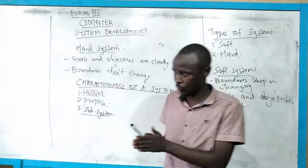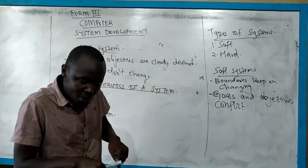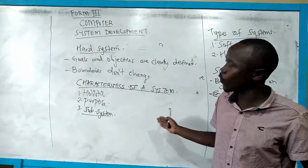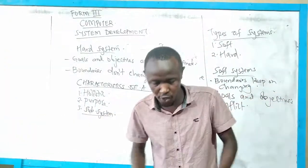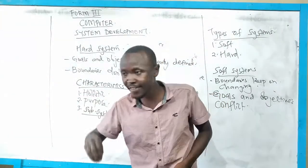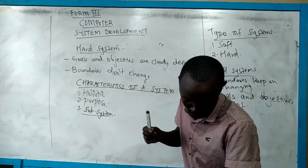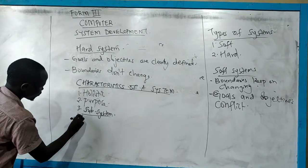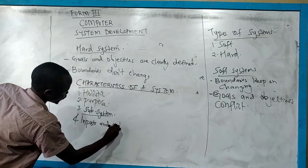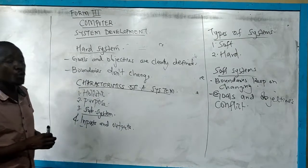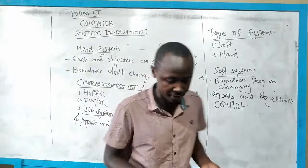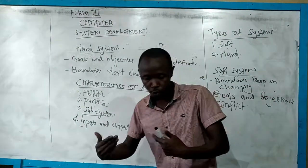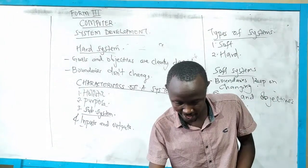A subsystem is a small unit of a system. For example, when you are in school, the school itself is a system — it entails so many components. But when you combine those schools, you still make the education system. So a school is an example of a subsystem within the education system. Systems should also have inputs and outputs. Inputs are what you key in to the computer or system in order to get the desired results.